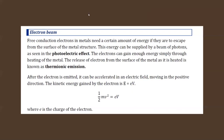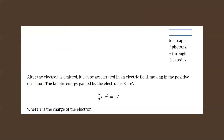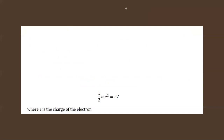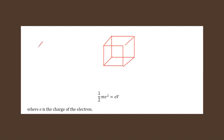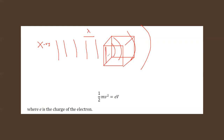We can use a beam of electrons to investigate matter, for example the structure of a crystal. We can use X-ray diffraction or electron diffraction. In X-ray diffraction, X-rays are electromagnetic waves, and when the wave passes through the crystal a diffraction pattern is observed. This shows that the wavelength is comparable with the spacing - the distance between the ions - so diffraction occurs.